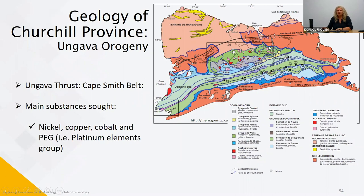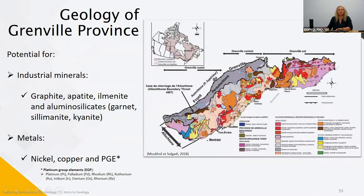Going down to the Grenville Province, it is mainly known for its industrial minerals: graphite, apatite, ilmenite, and aluminosilicates such as garnet, sillimanite, and kyanite. The positions of Sept-Îles, Baie-Comeau, and the massive graphite mine are around this area. We also explore the Grenville Province for metals such as nickel, copper, and PGEs.